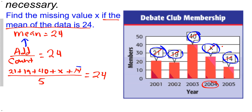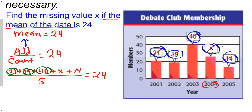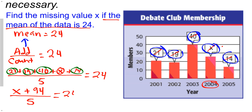Looking at the numerator, I'm going to combine like terms. The like terms are 21, 19, 40, and 14 — the unlike term is X. So I'll have X plus something over 5. Combining those like terms: 21 plus 19 plus 40 plus 14 gives me 94. So I have (X + 94) / 5 = 24.